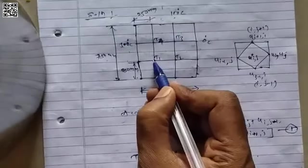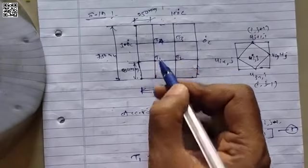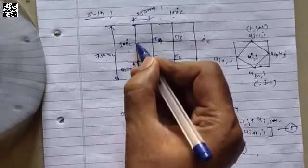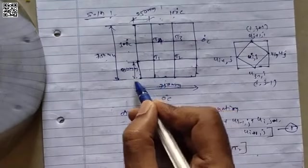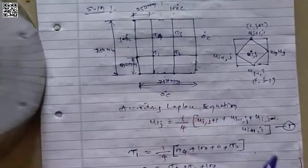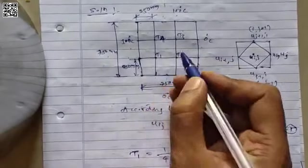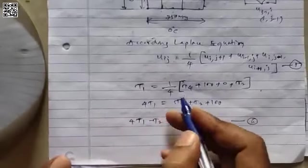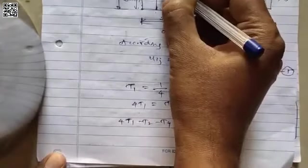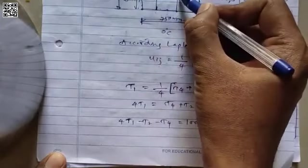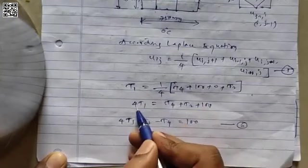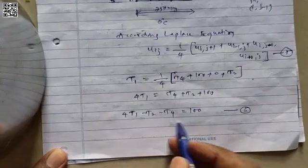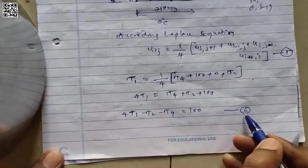For T1: the right side is T2, the top side is T4, the left side is the boundary at 100°C, and the bottom side is the boundary at 0°C. So T1 = (1/4)(T4 + 100 + 0 + T2), which rearranges to 4T1 − T2 − T4 = 100. Let us call this equation A.